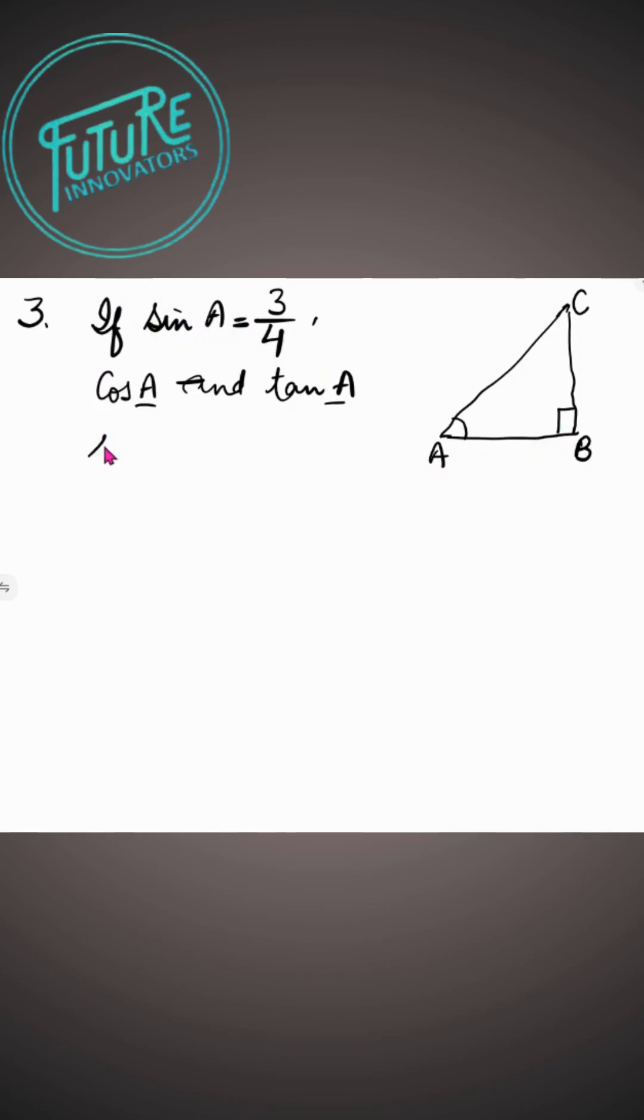So now sin A. We know that sin A is P upon H, which is equal to 3 by 4. It means the perpendicular is 3, and hypotenuse is 4. So we have to find out base.